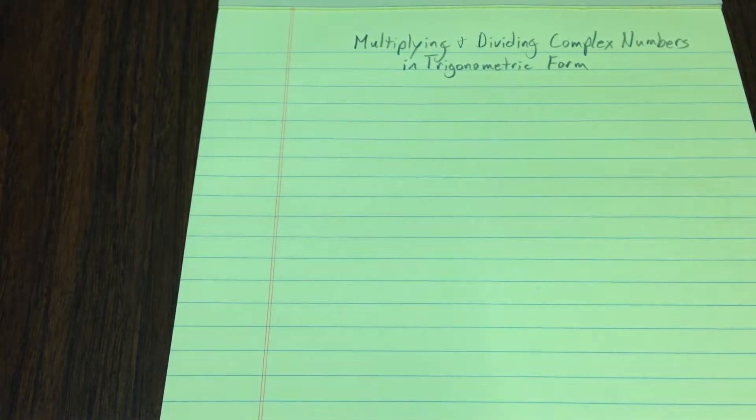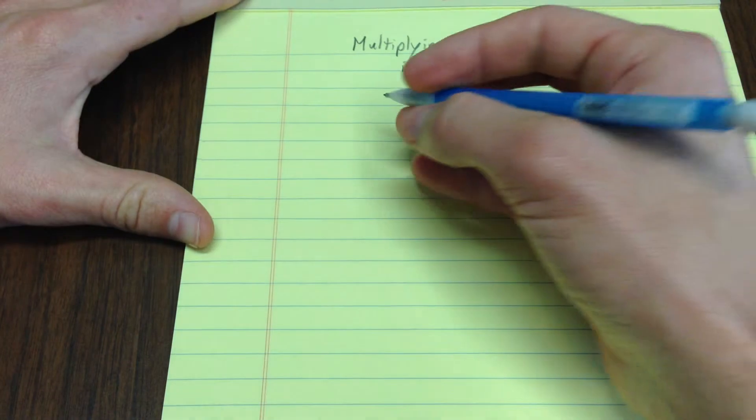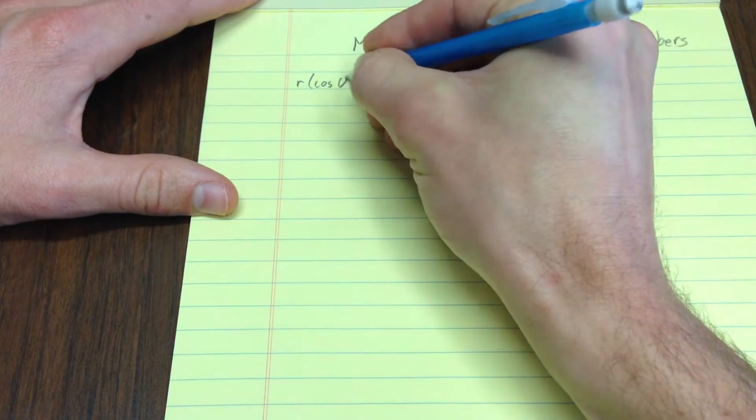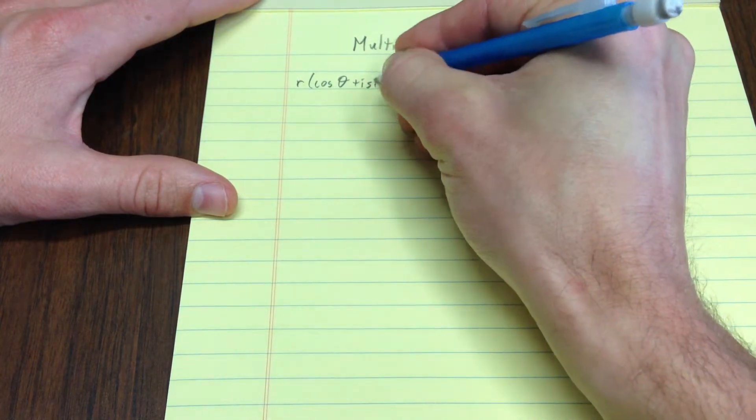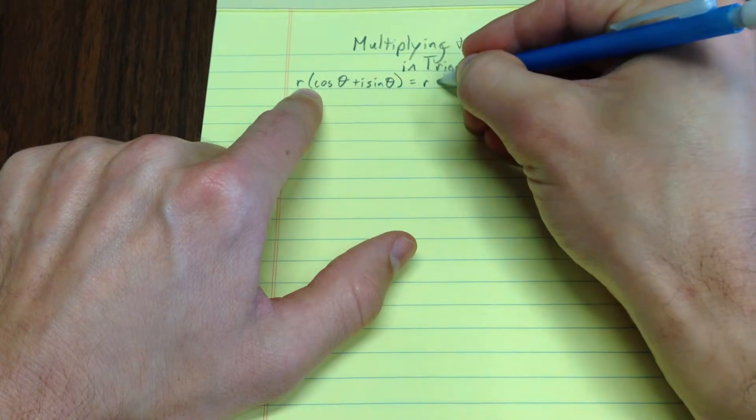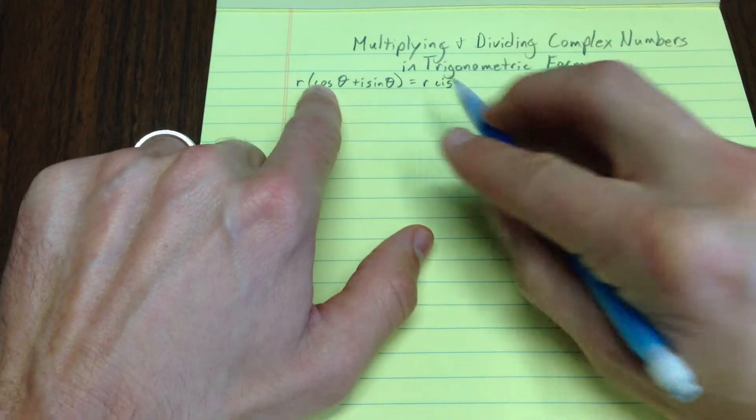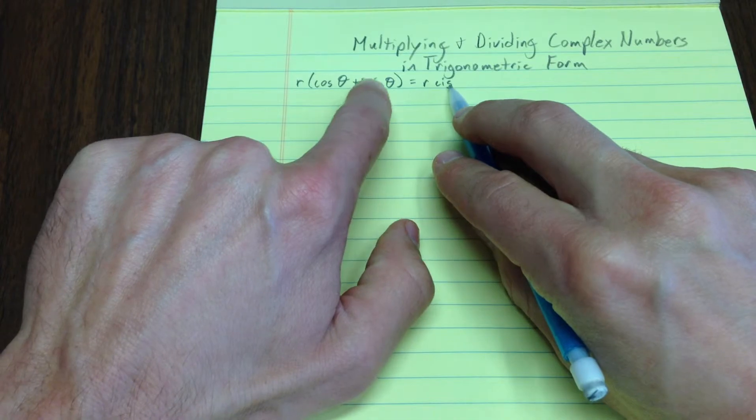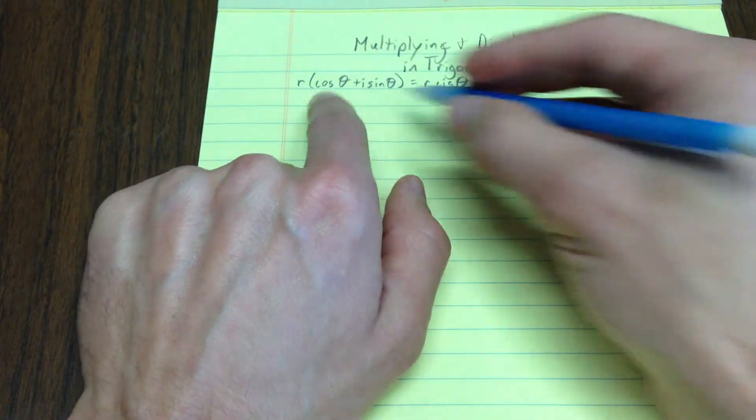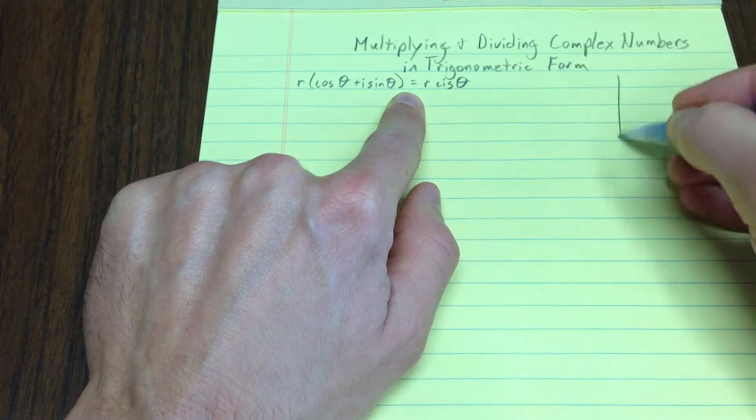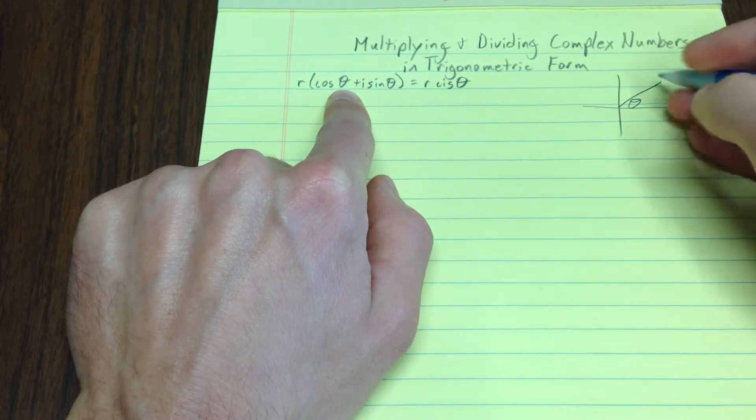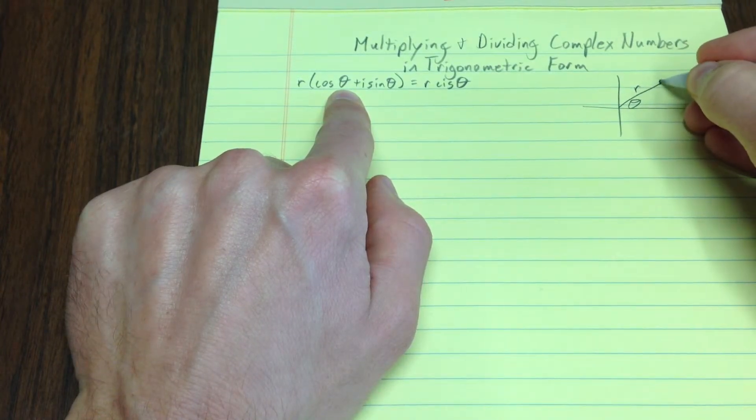You have numbers in trigonometric form. Remember, trigonometric form you can think of as r cosine theta plus i sine theta, or the shorthand for that is r cis theta. Cis stands for cosine i sine theta. This notation represents a point that is rotated up theta from the positive x-axis, go out r, that's your point.